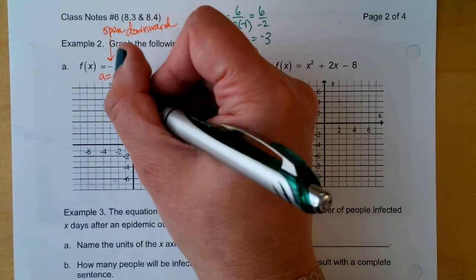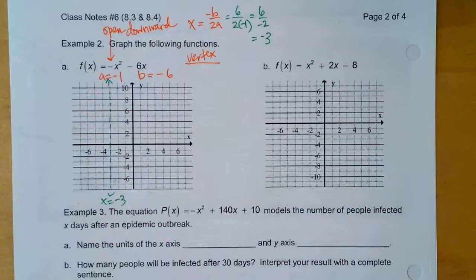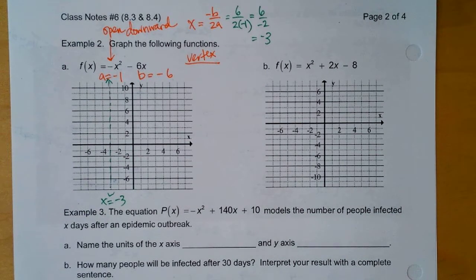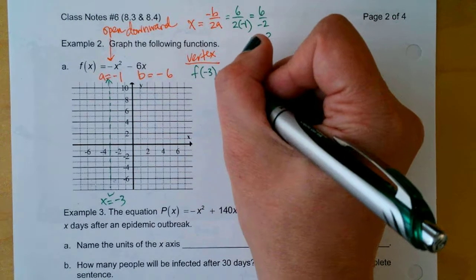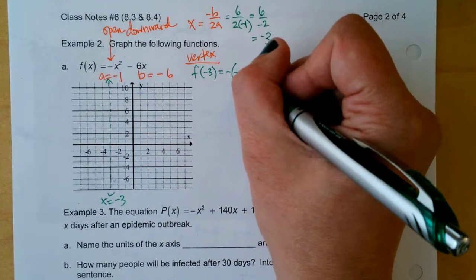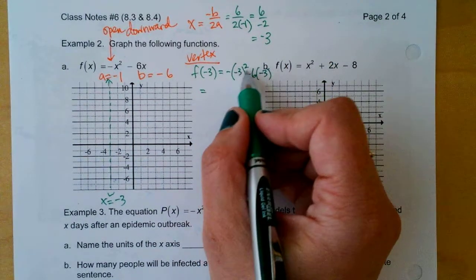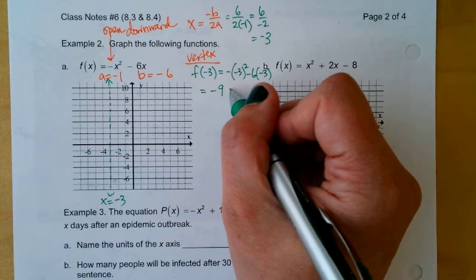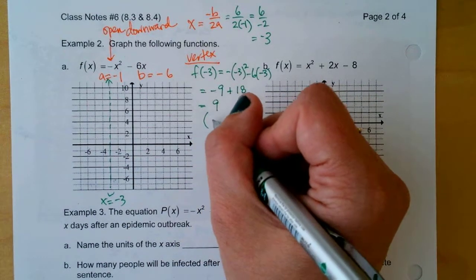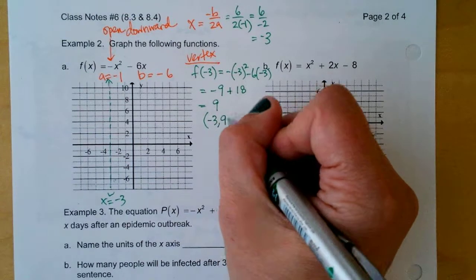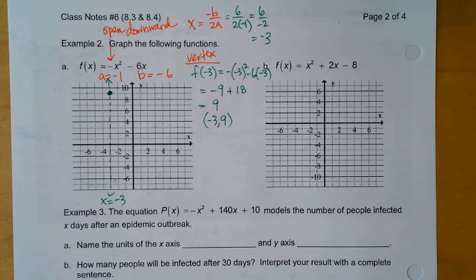So axis of symmetry is going to be right over here at X equals negative 3. And then from there, we want to have the vertex. So if I plug in F of negative 3, I'm going to get negative, negative 3 squared minus 6 times negative 3. So that's negative 9. Do you see why I'm getting a negative 9? Plus 18. And what's negative 9 plus 18? 9. So the vertex is negative 3, 9. Does that make sense that it would be negative 3, 9? It would be all the way up here? And that makes sense because the parabola opens downward.